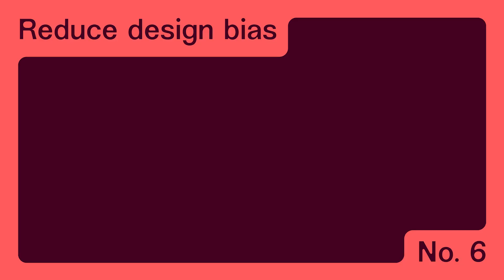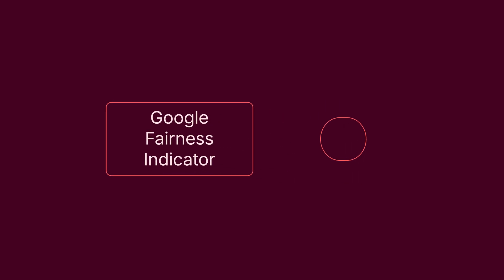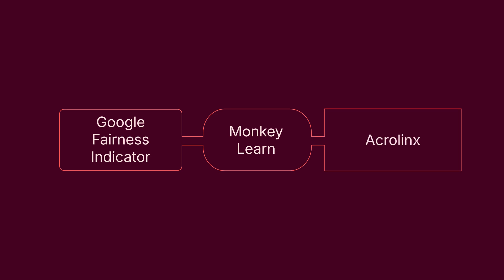Last but not least, number six: use AI tools to decrease design bias. Bias in UX design can significantly skew a product's appeal and usability, and AI helps to counteract these tendencies by identifying bias patterns in design choices. Examples of AI tools to decrease bias in UX design include Google Fairness Indicator, MonkeyLearn, and Acrolinx.